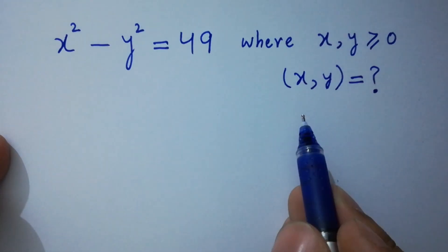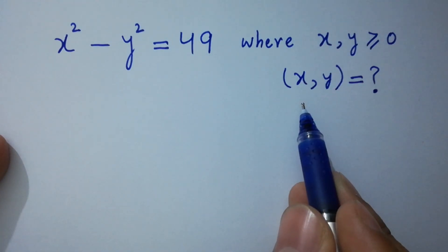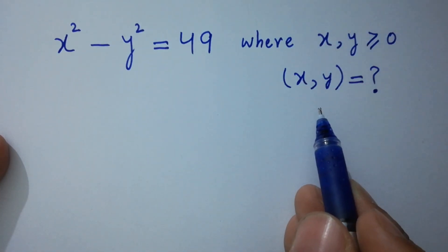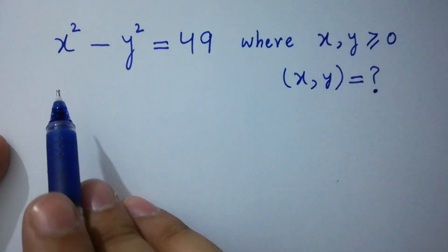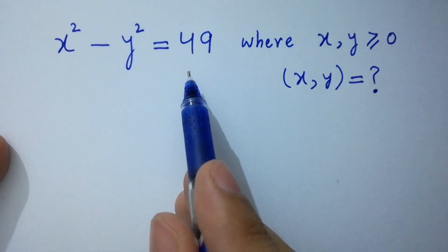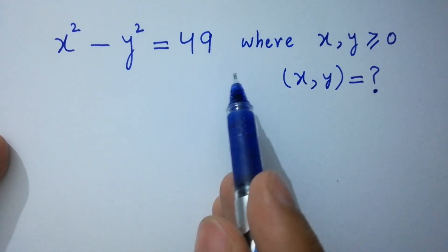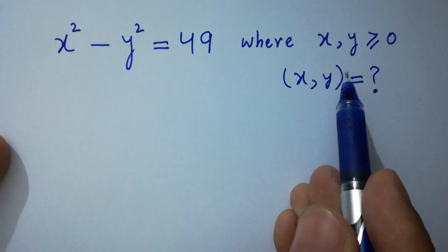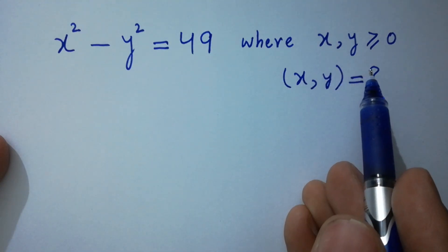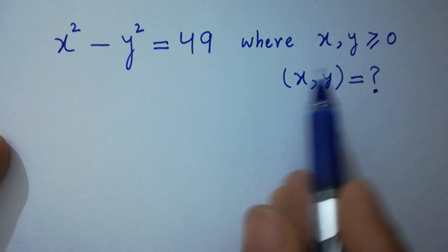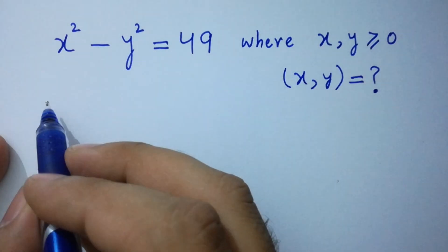Hello friends. Find the value of x and y if x squared minus y squared equals 49, where x and y are greater than or equal to 0 — positive values. Let's have a solution.